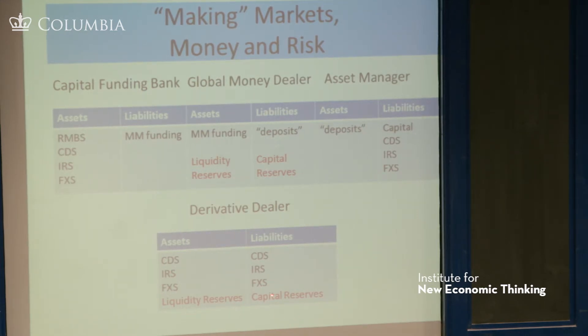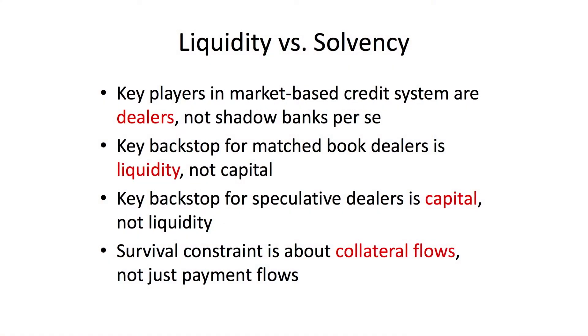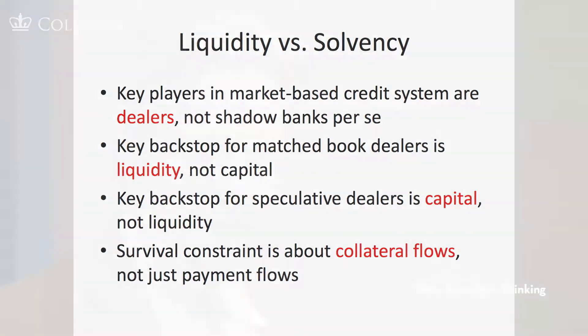Capital reserves are important for the speculative dealer part — the proprietary dealer part — and this is true for the derivative dealer as well as the money market dealer. So four ideas to guide thinking about regulating the shadow banking system of the future, and they might change because this is a moving target. One: the key players to focus on are not the shadow banks but the dealers — the money dealers and the derivative dealers. Two: distinguish between matched book dealers and proprietary/speculative dealers.